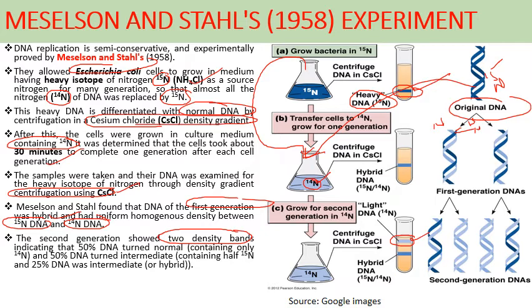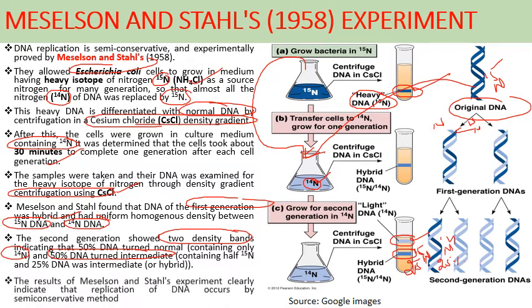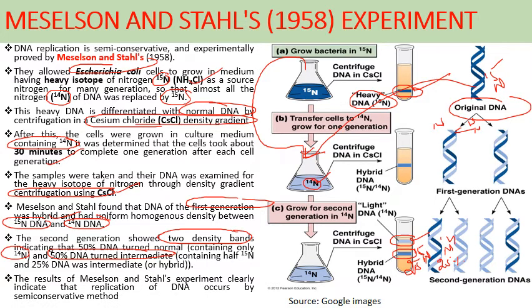In the second generation, 50% of DNA turned normal containing only N14 and 50% remained intermediate hybrid. This means 25% had heavy nitrogen N15 and 25% had light nitrogen N14 as hybrid. The results of Meselson and Stahl's experiment clearly indicate that DNA replication occurs by the semi-conservative method, where one strand is parental and one strand is the new daughter strand.